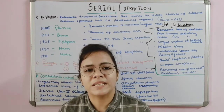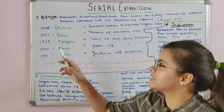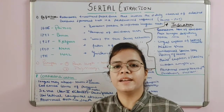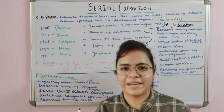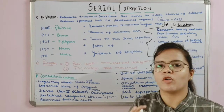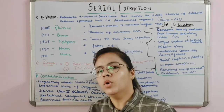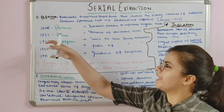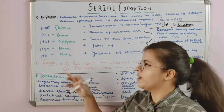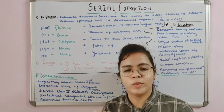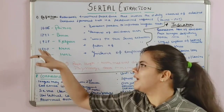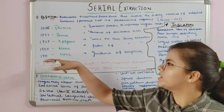Regarding the history of serial extraction: it started in 1600 when Fauchard said that extraction treatment has to be done in certain cases so that irregular teeth can be corrected. In 1743, Bunon said that certain deciduous teeth have to be removed to correct malaligned teeth. In 1929, Kjellgren was the first person to coin the term 'serial extraction.' In 1940, Nance was said to be the father of serial extraction — this was a notable MDS exam question.